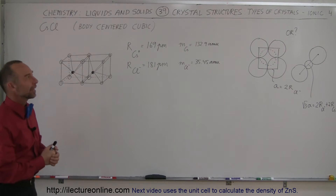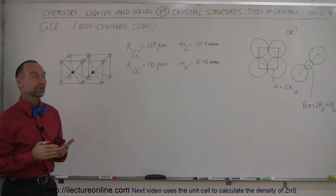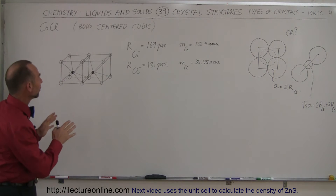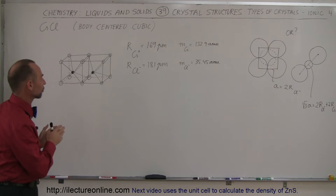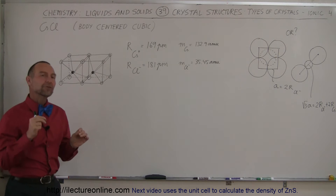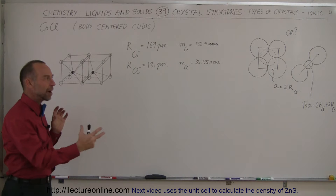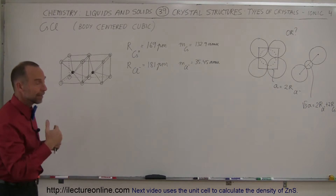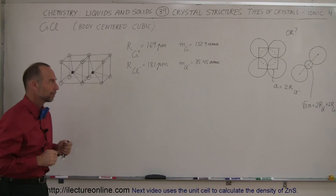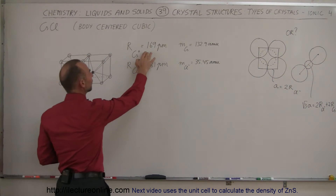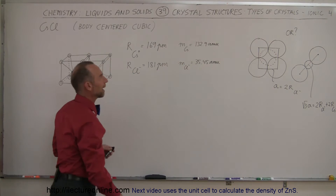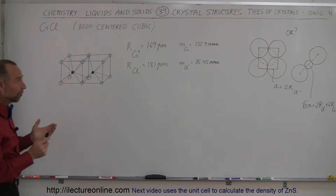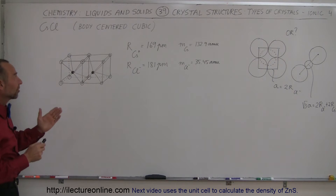Welcome to ElectronLine. Here we're going to take a look at another type of crystal — cesium chloride. It is a simple body-centered cubic structure. We have to use our understanding of how things are packed together to figure out, first, how the structure looks, and secondly, how to find the density of such a structure. I did put down the radii of each of the two ions and the atomic mass of each, so we can figure out the density later. But first, why is it a body-centered cubic structure?